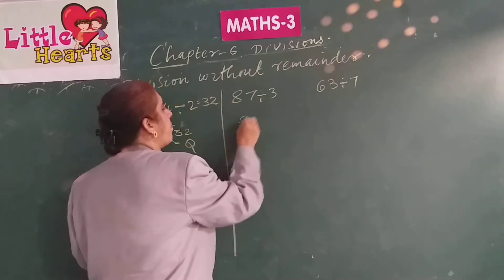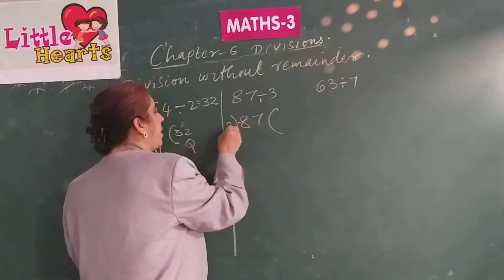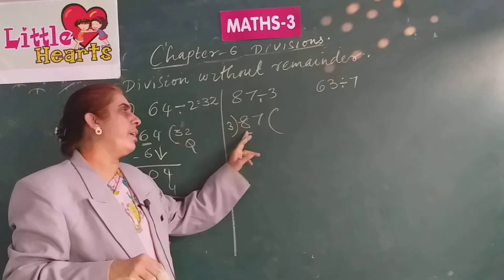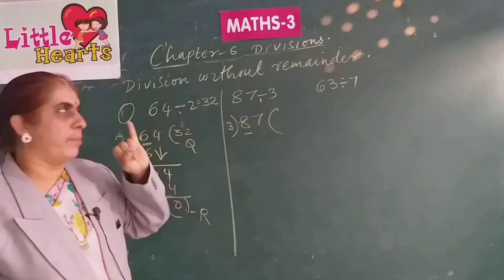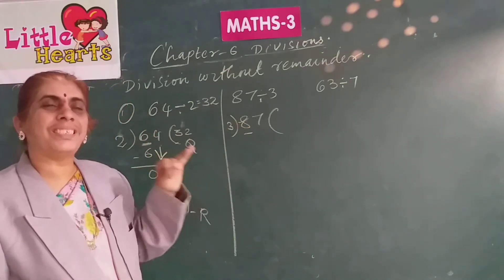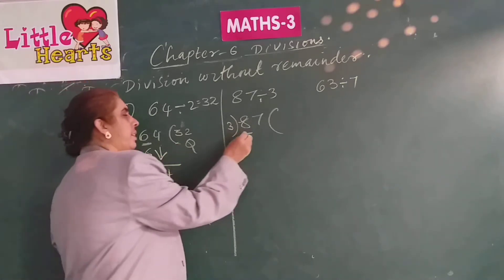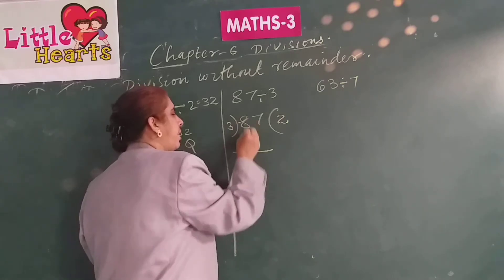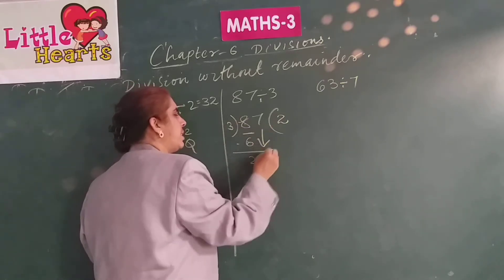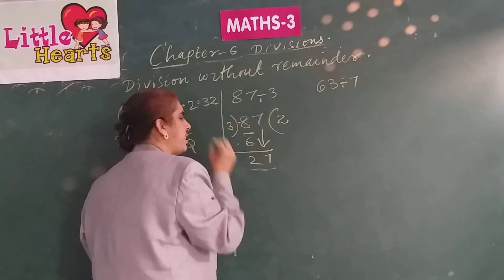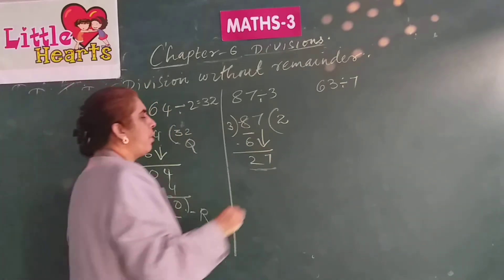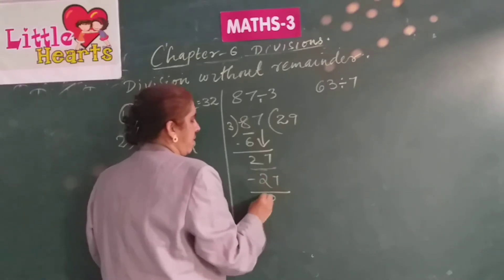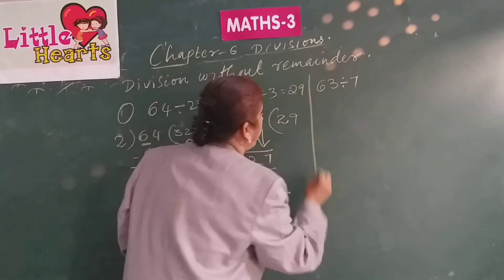In the same way, 87 divided by 3. As 8 is greater than 3, take only 1 digit: 8. Read 3 table: 3 twos are 6; 8 minus 6 is 2. Bring down 7, now consider 27. 3 nines are 27. So 87 divided by 3 is equal to 29.